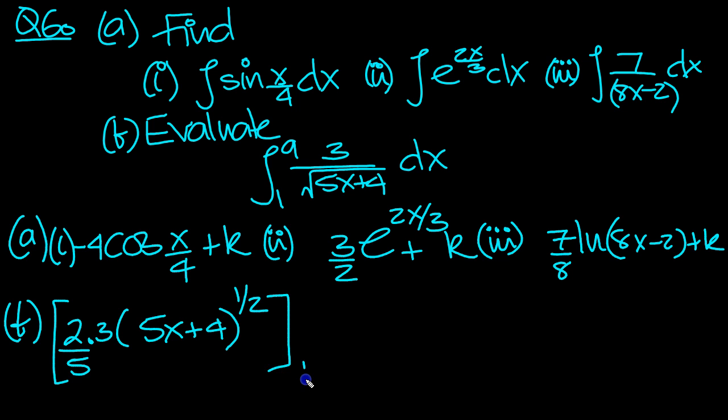And we're integrating that between 1 and 9. So we end up with 6 fifths. Pull that outside. Top value, put 9 in here. 45 plus 4 is 49. Square root of 49 is 7. So I can write that down straight away. That was the top value.